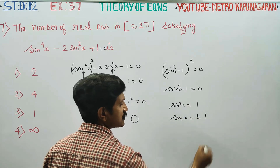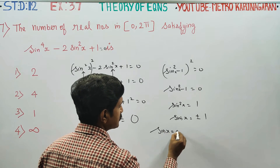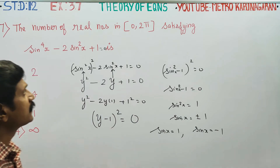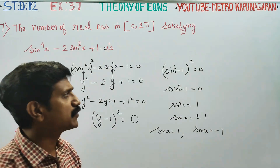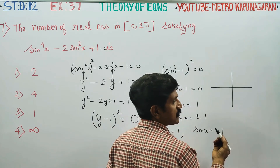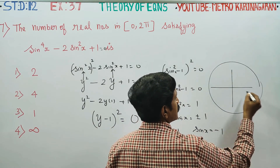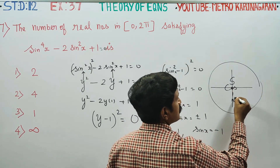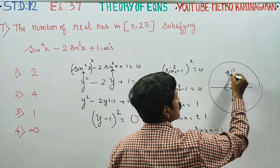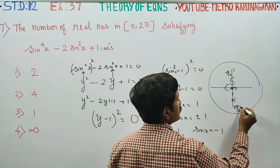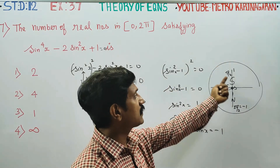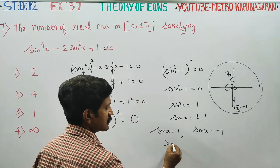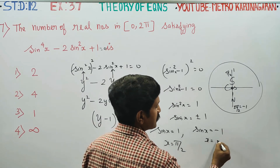From sin²x = 1, sinx = ±1. In the interval [0, 2π], we have 4 quadrants. sin(90°) = 1 and sin(270°) = -1, so sinx = +1 gives x = π/2 and sinx = -1 gives x = 3π/2.